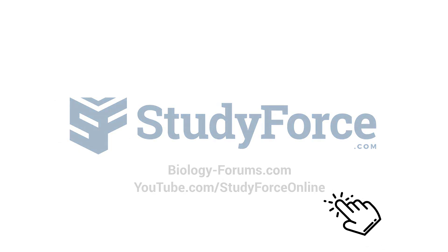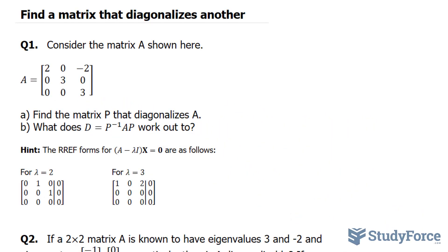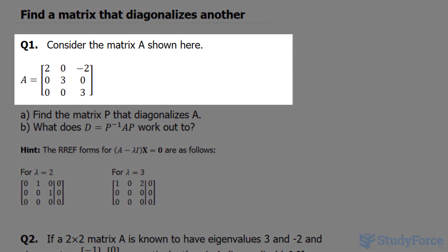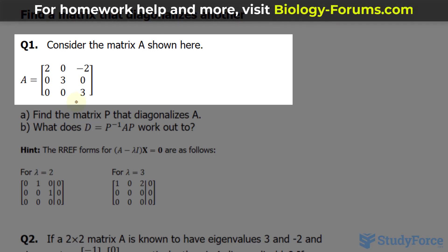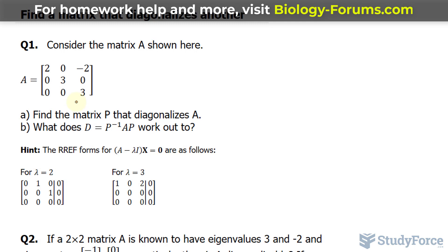In this lesson, we'll go through two examples where we learn how to find the matrix that diagonalizes another using our knowledge of eigenvalues and eigenvectors. The question reads, consider the matrix A shown below. Notice that it is a 3 by 3 matrix. We have to find a matrix P that diagonalizes A.